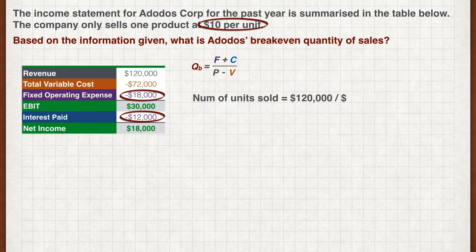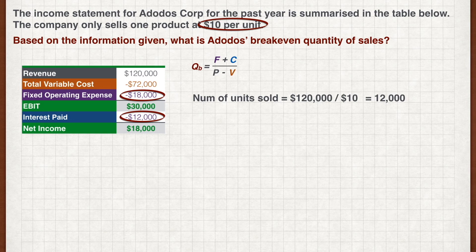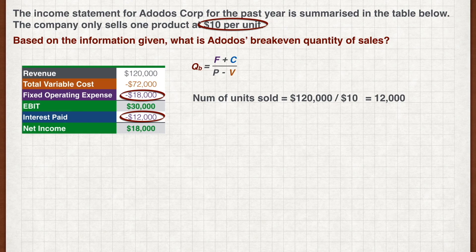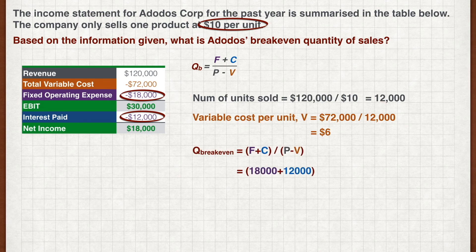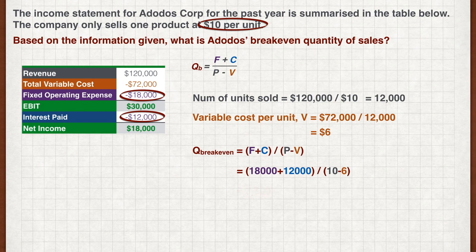Since there is only one product, the number of units sold is the revenue divided by the price per unit, which gives us 12,000 units. The variable cost per unit is therefore $6. Plug all the figures into the formula and we get a break-even quantity of 7,500 units.